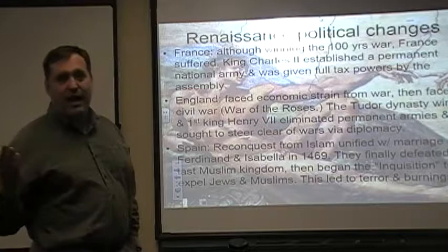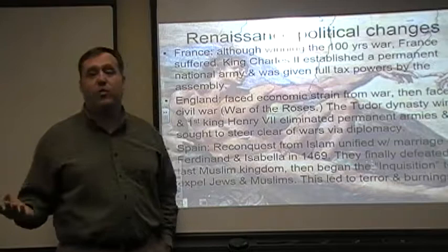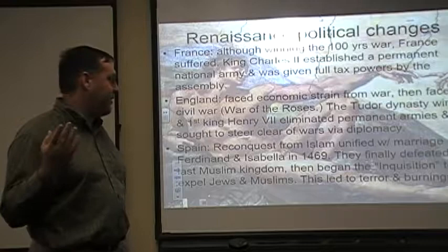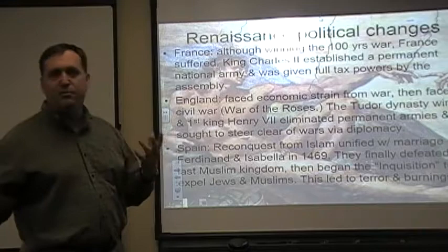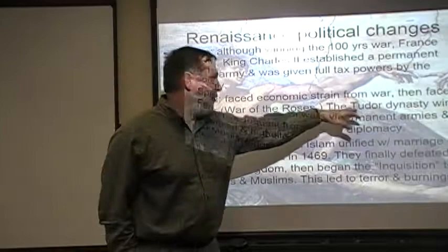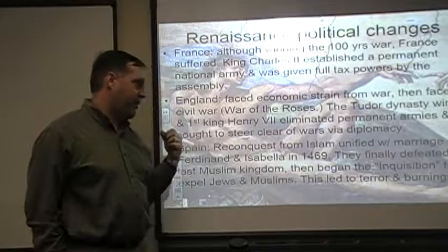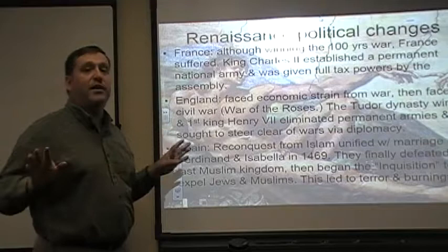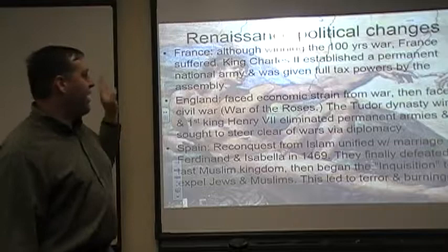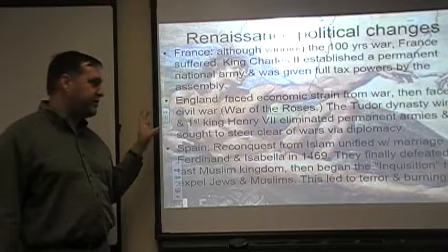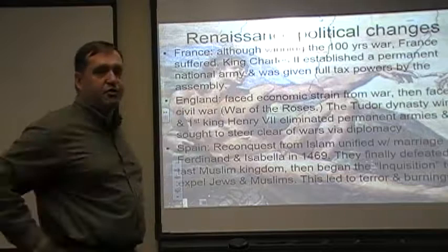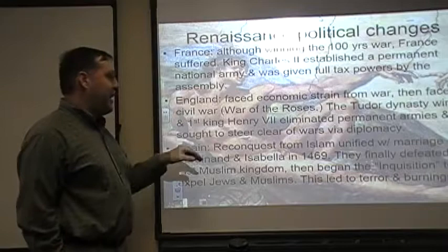England is the loser of the Hundred Years' War and faces economic strains from losing, followed by a civil war — the War of the Roses — Lancaster versus York, going multi-generational. The Tudor dynasty wins, with Henry VII as their first king. Their conclusion: permanent armies are a problem, so they get rid of them and steer clear of wars via diplomacy. This actually puts England in an interesting spot later, as they focus on commercial interests and trading with people around the world.